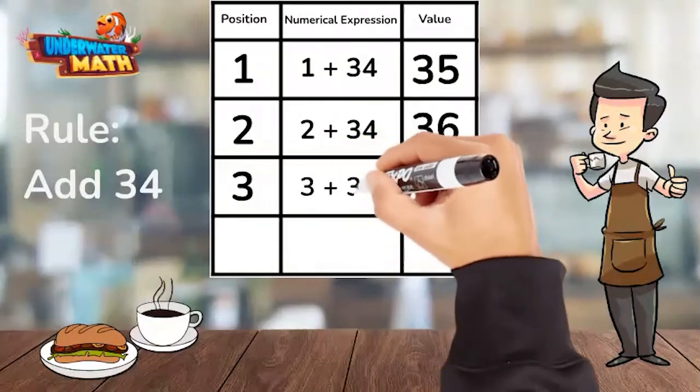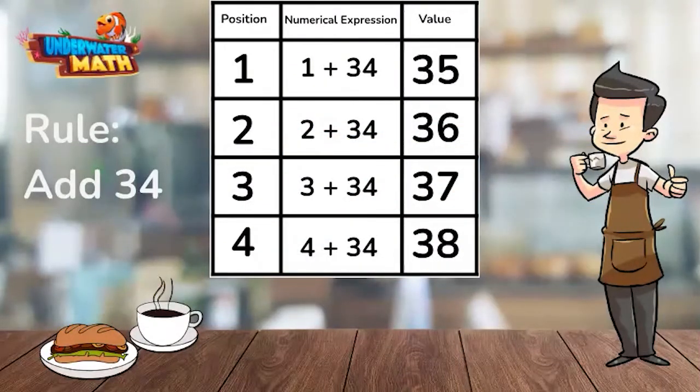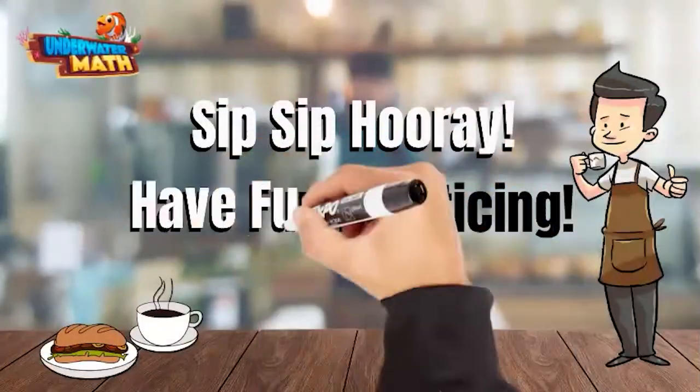Position three plus 34 is equal to 37, and position four plus 34 is equal to 38. You did it! Sip sip hooray! Have fun practicing.